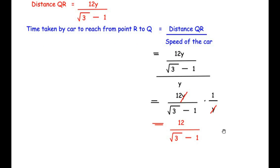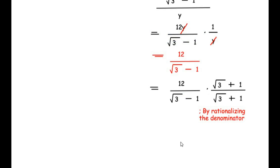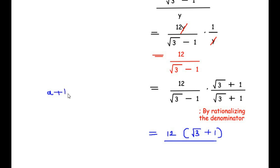Since the question asked to round to the nearest minute, the time taken by the car to reach the tower is 16 minutes. Now let us move on to the OR question.